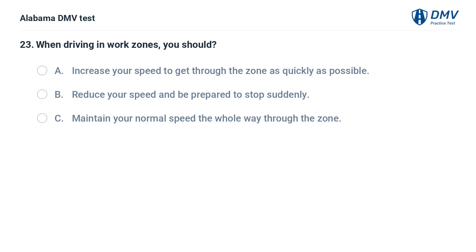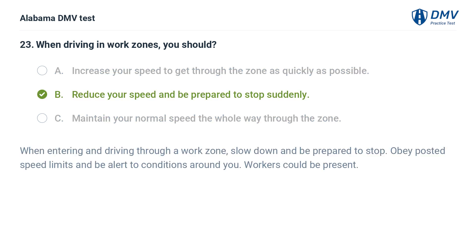When driving in work zones, you should: A. Increase your speed to get through the zone as quickly as possible. B. Reduce your speed and be prepared to stop suddenly. C. Maintain your normal speed the whole way through the zone. Correct answer: B. When entering and driving through a work zone, slow down and be prepared to stop. Obey posted speed limits, be alert to conditions around you, and watch for workers who could be present.